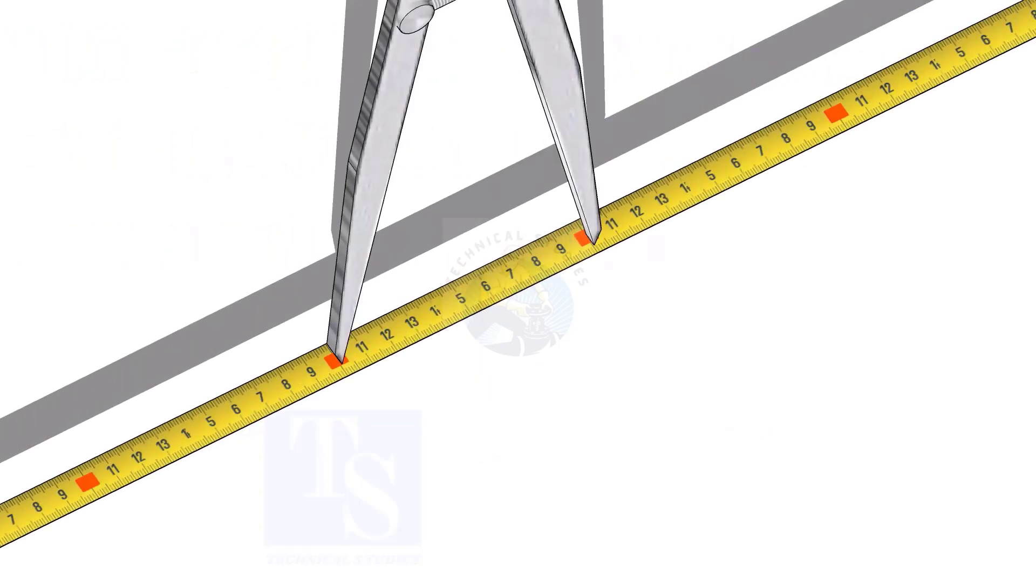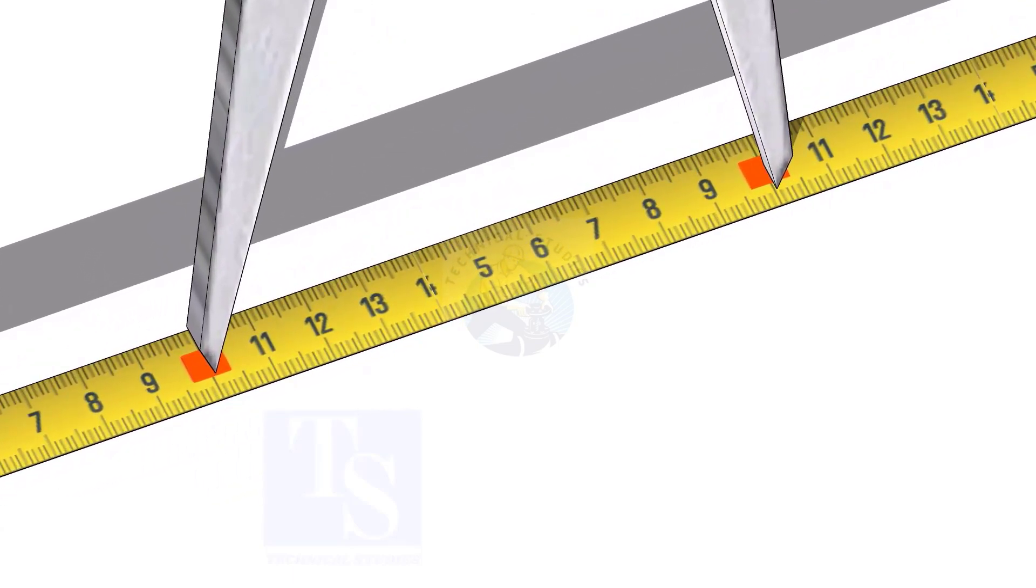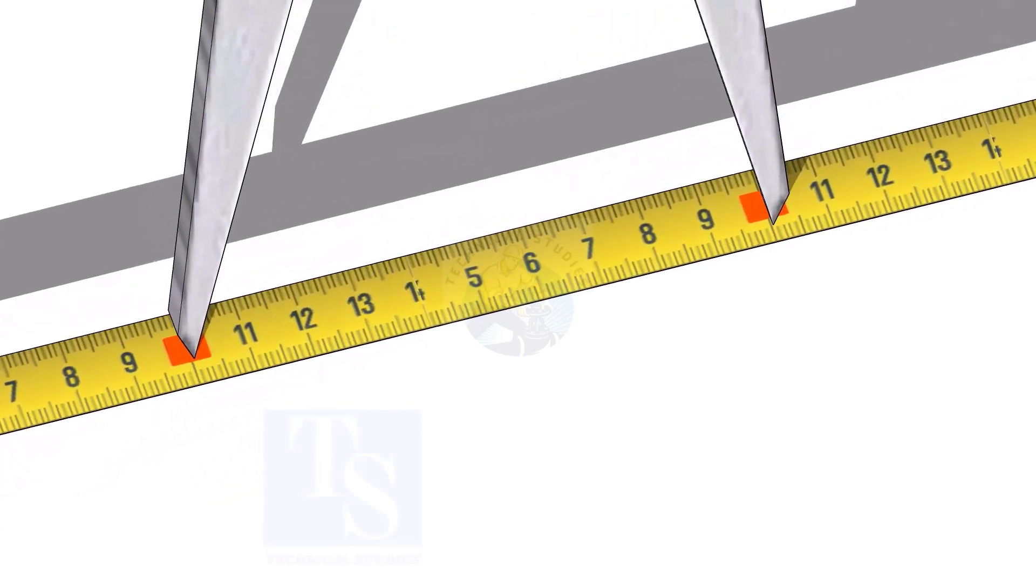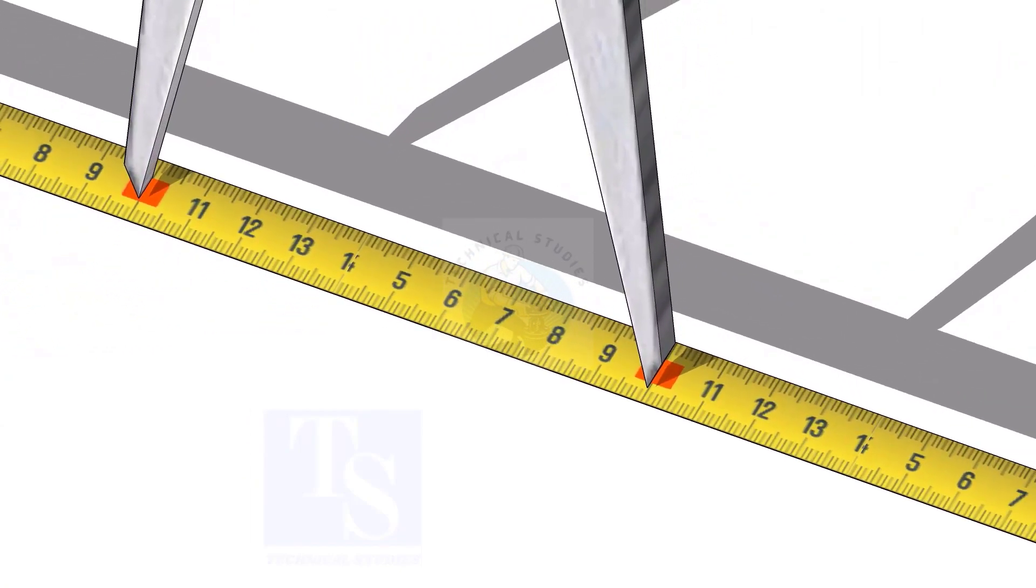Adjust the divider to 100mm. Remember, this method is suitable for small diameter cones only. For large cones, you need to follow the cord length marking method.